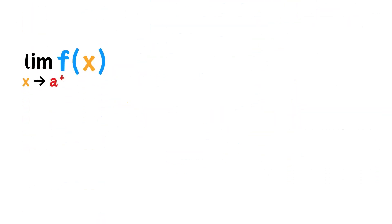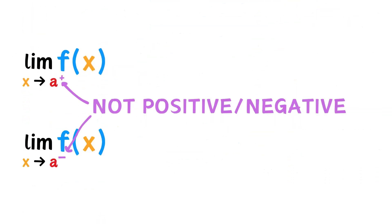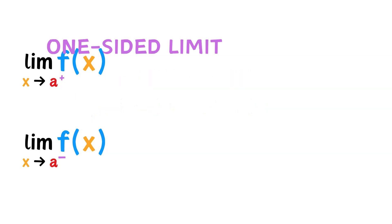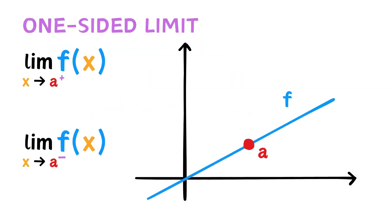If you see a limit whose target value has a plus or minus sign, this does not mean positive or negative. This means we are finding a one-sided limit. As the name implies, a one-sided limit is taken from only the left or the right. A minus sign tells us to find the limit from the left, and a plus sign is the limit from the right.